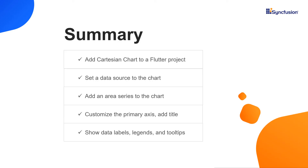That's it. Let me summarize the main points of this video. You saw how to add the Syncfusion Flutter Charts widget to a Flutter project, how to set a data source and plot data as an area series, and how to customize the primary axis, add a title, and show data labels, legends, and tooltips. You can download this working example from the GitHub link and documentation link in the video description below. You can also check whether you are eligible for our community license, which gives you a free license key to use our Flutter products. If you found this video useful, click the like button and subscribe to our channel for more videos. Thanks for watching.